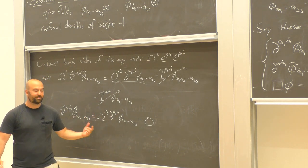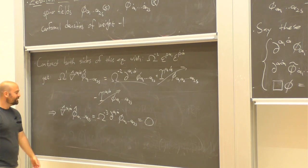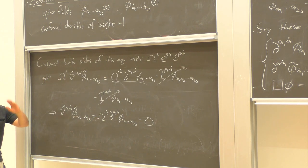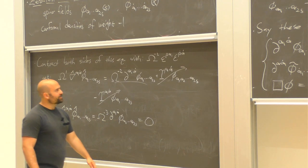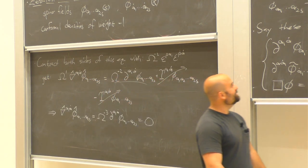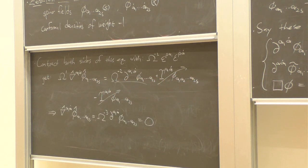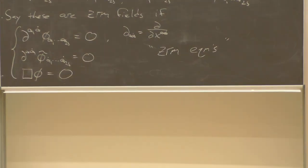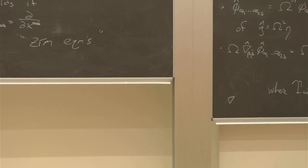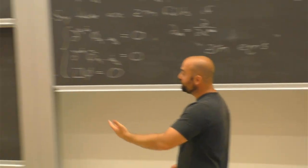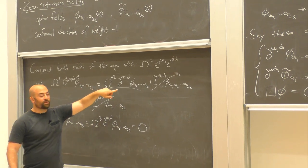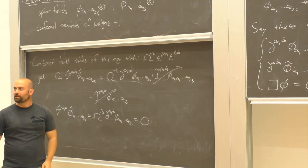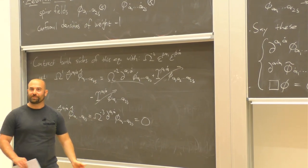There's a factor of omega^{-3} here, but it's zero. So in some sense the point is: you solve the equation in one conformal frame, you solve it in all of them. If I picked a different conformal weight for the zero rest mass field, I would generate many other terms which would give non-vanishing contributions when contracting with epsilons, and they wouldn't all cancel. You can work that out for yourself as an exercise.